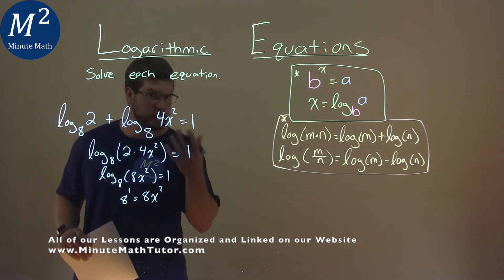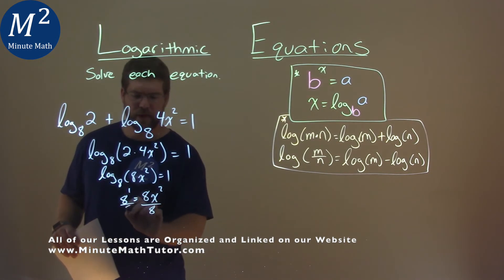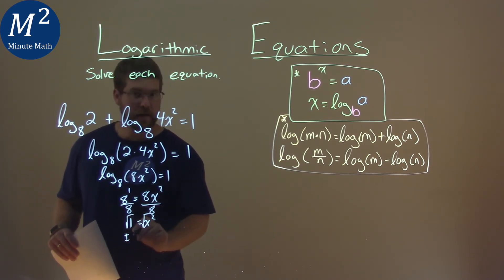Well, 8 to the first power is just 8, and I divide both sides by 8, and I have 1, which is equal to x squared. Take the square root of both sides, and when doing that we have a plus or minus—don't forget that—square root of 1, which is 1, that's equal to x.